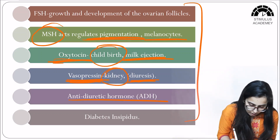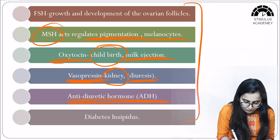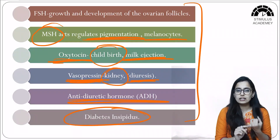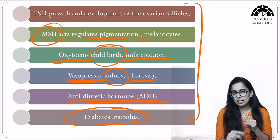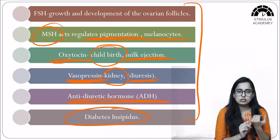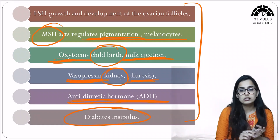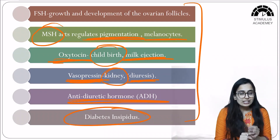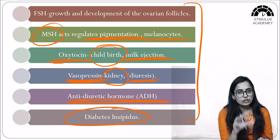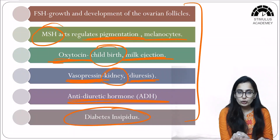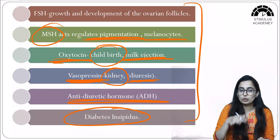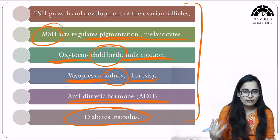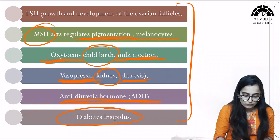Vasopressin acts on the kidney and concentrates the urine — it is anti-diuretic hormone, meaning it prevents excess water loss. Diabetes is of two types: diabetes mellitus, caused by deficiency of insulin, and diabetes insipidus, caused by deficiency of ADH (vasopressin). Without vasopressin, urine cannot be concentrated, and a large amount of water is passed with the urine.